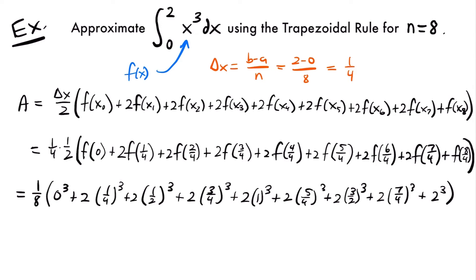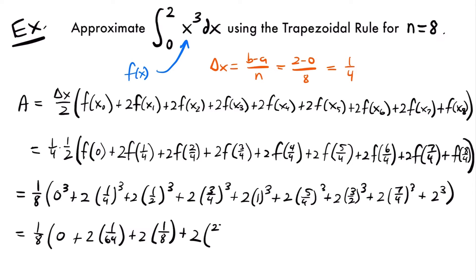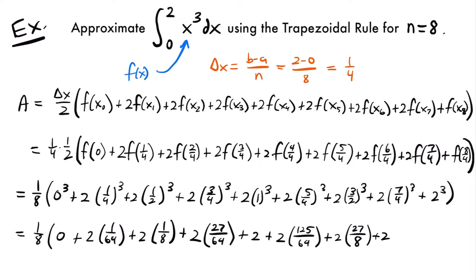Going through each term and cubing them, this equals 1 eighth times 0, plus 2 times 1 sixty-fourth — since 1 cubed is 1 and 4 cubed is 64. Then plus 2 times 1 eighth, because 2 cubed is 8. Then plus 2 times 27 over 64 — 3 cubed is 27, 4 cubed is 64. Plus 2 times 1. Plus 2 times 125 over 64. Plus 2 times 27 over 8. Plus 2 times 343 over 64. And plus 2 cubed, which is 8.